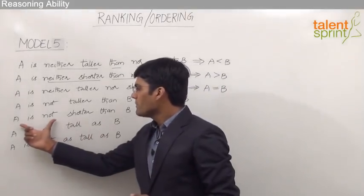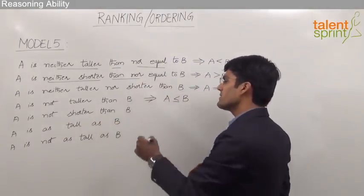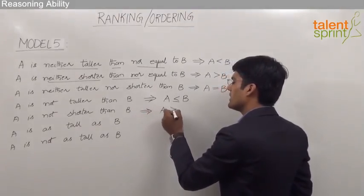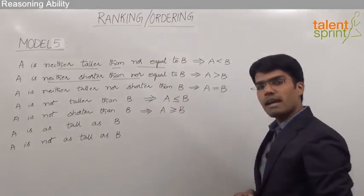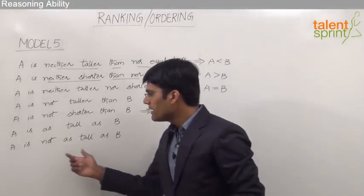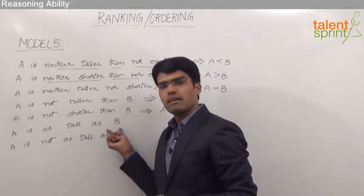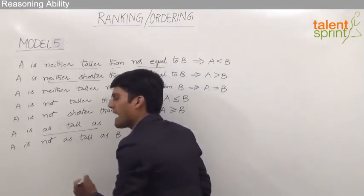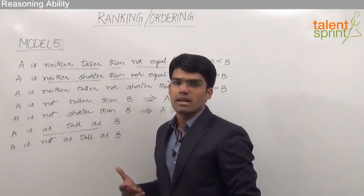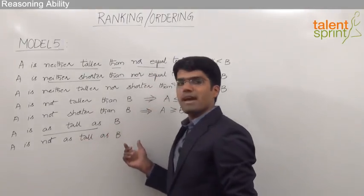Similarly, the statement 'A is not shorter than B' means A can be taller or equal to B — that is, A is greater than or equal to B. Moving on, 'A is as tall as B' — remember, the phrase 'as tall as' or 'as heavy as' when comparing weight means A is the same as B, so A is equal to B.